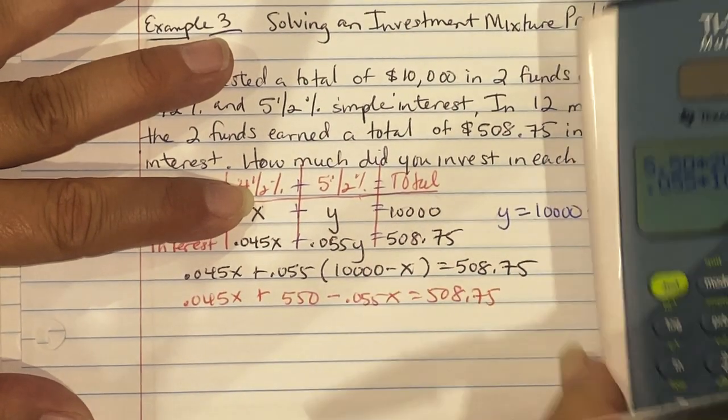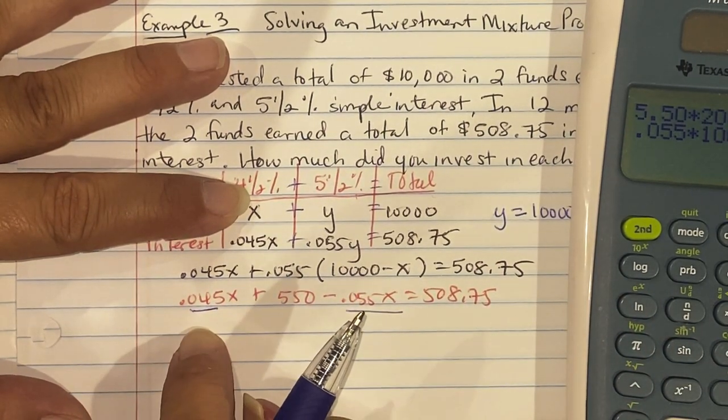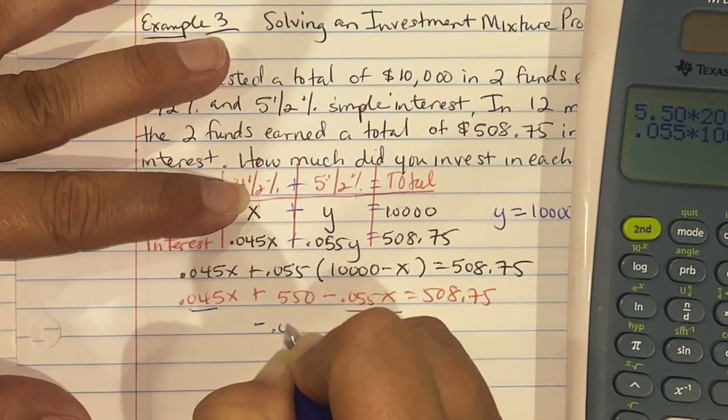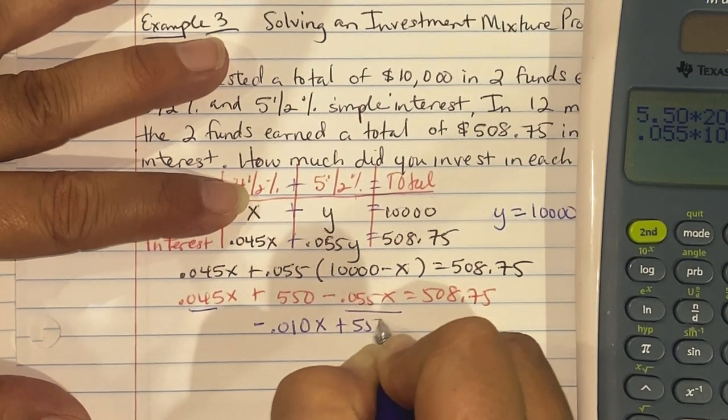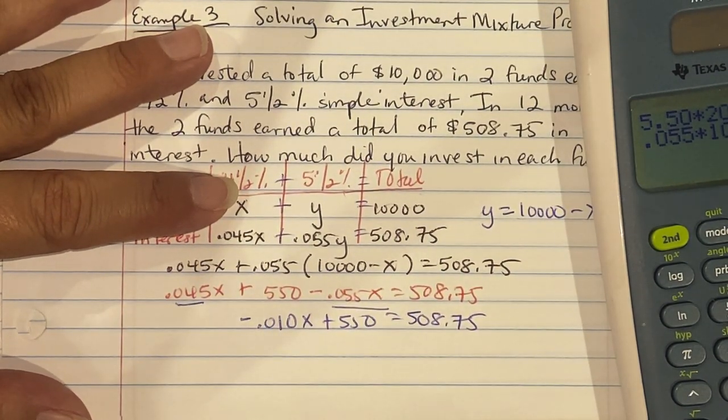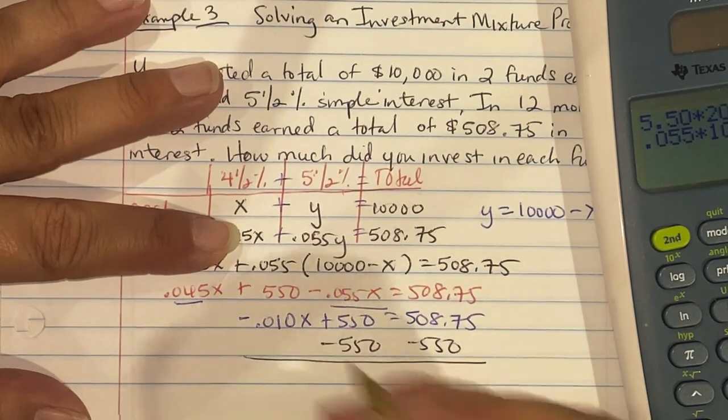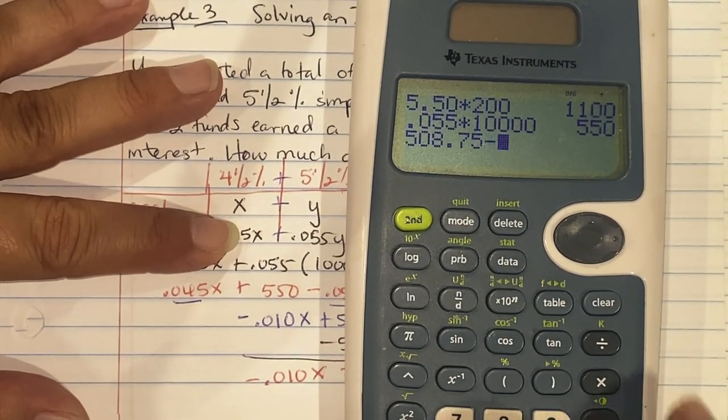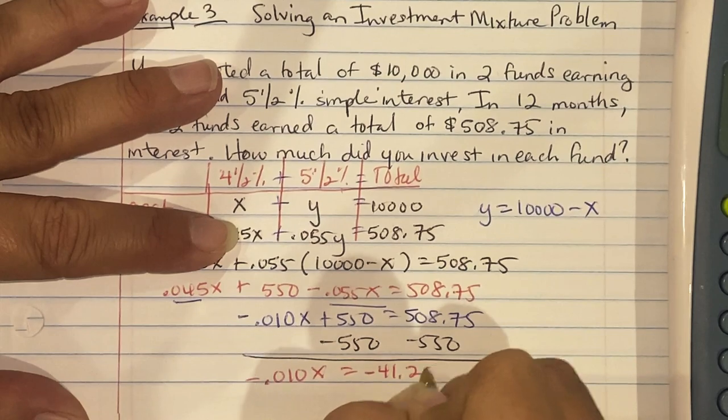Combine your like terms. So the X's, I had 4.5 pennies, I spent 5.5 pennies, so I'm short 0.010 pennies. Negative 0.010X plus 550 equals 508.75. Subtract the 550 over. So you have negative 0.010X equaling 508.75 minus 550, which is negative 41.25. And then you're dividing both sides by negative 0.010.